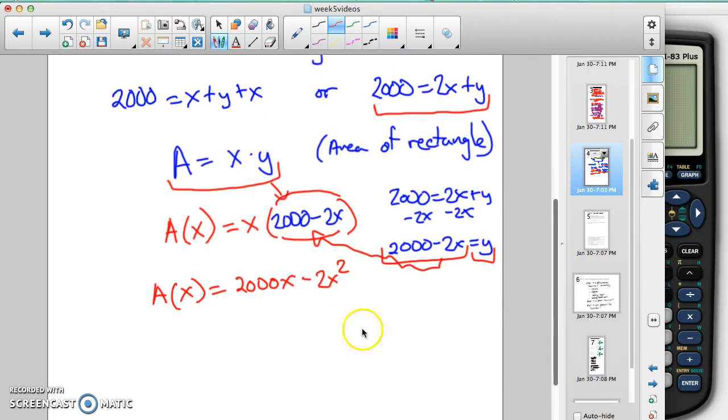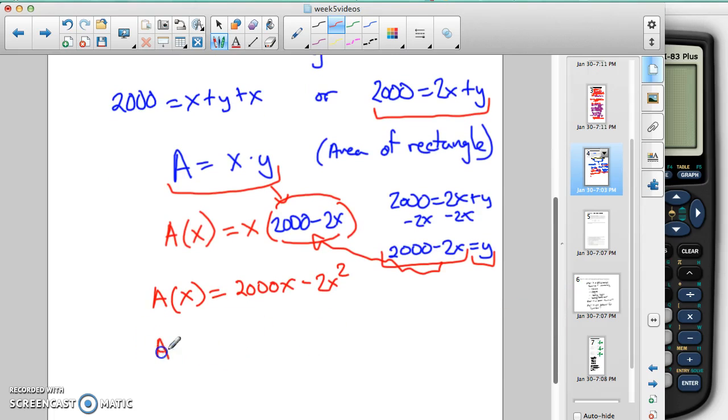So if we wrote this in standard form, it would be negative 2x squared plus 2,000x.